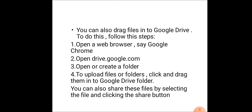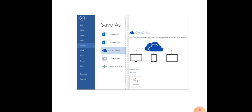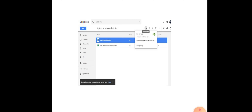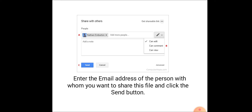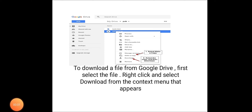To do this, follow these steps. Open a browser, say Google Chrome. Second, open drive.google.com. Third, open or create a folder. Fourth, to upload files or folders, click and drag them into the Google Drive folder. You can also share these files by selecting the file and clicking the share button. Enter the email address of the person with whom you want to share this file and click the send button. To download a file from Google Drive, first select the file, right click and select download from the context menu that appears.